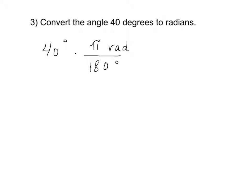So when we do this, the degrees units cancel, and I'm left with the radians unit behind, and then all I have to do is simplify 40 pi over 180.